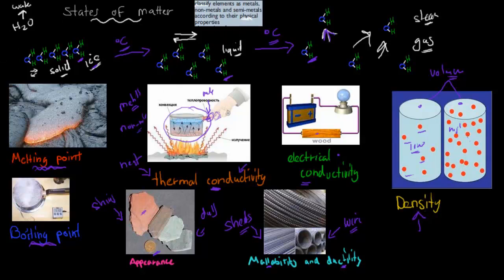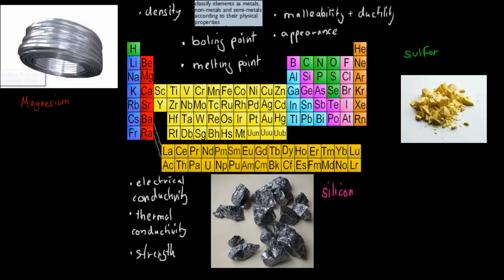Now what we have to do is relate these properties and use them to classify things as metals, non-metals, or semi-metals. On the periodic table, most of the metals are found on the left and middle sections, except for hydrogen which is a non-metal. The semi-metals run diagonally from boron down to tellurium. The elements to the right-hand side — from carbon down through to the noble gases — are all non-metals.